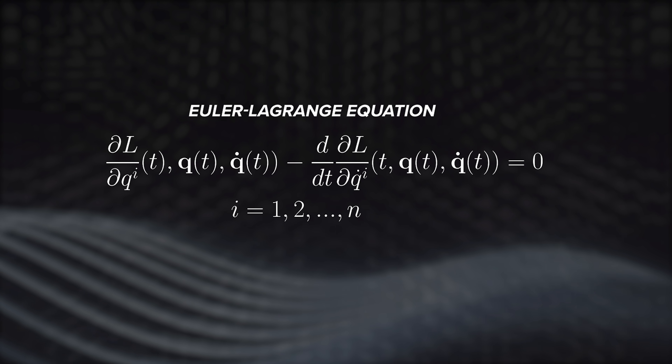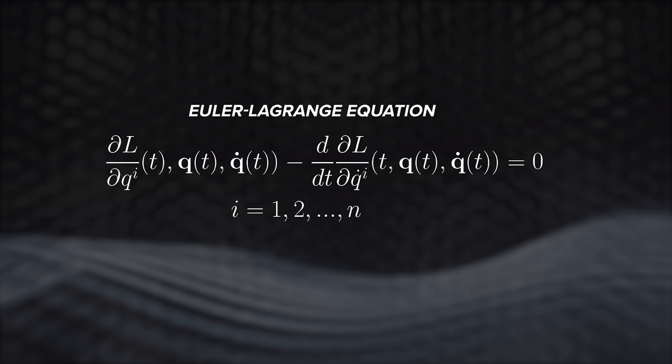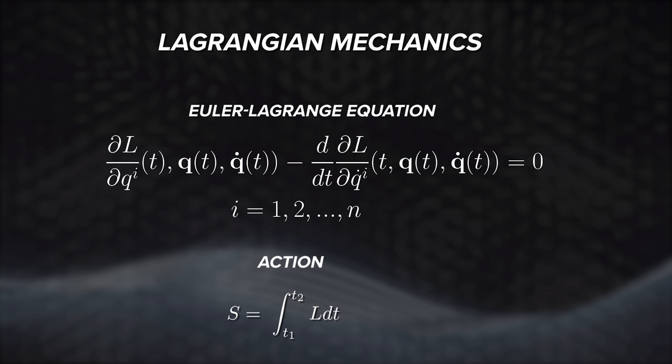If the principle of least action is true, then it should be possible to figure out the path that any object will take between two points, as long as you can find a way to determine which has the minimum action. That sounds hard, but thankfully Lagrange and Euler already did most of the work by finding the Euler-Lagrange equations, allowing both physics students and nature to minimize their action. The principle of least action in combination with the Euler-Lagrange equations leads to Lagrangian mechanics. The hellishly complex equations needed to solve problems using pure Newton seem to just melt away into much simpler forms. This simplicity comes from the fact that with Lagrangian mechanics we can dispense with forces and vectors and only consider the energies. The principle of least action is so powerful that it really seems like it must be telling us something deep about the universe.